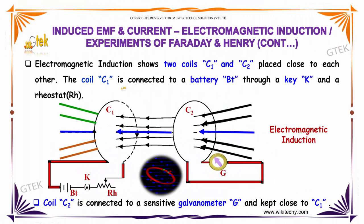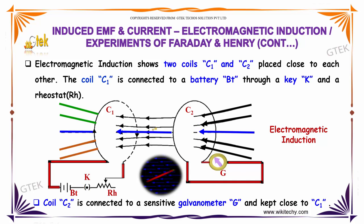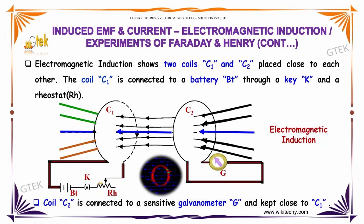Now, there are two coils, C1 and C2, placed close to each other. The coil C1 is connected to a battery BT, a key K, and a rheostat RH. Coil C2 is connected to a galvanometer and it is kept closed.